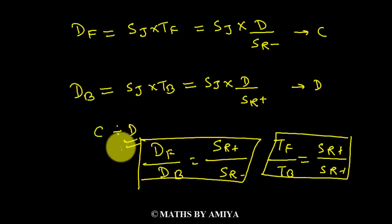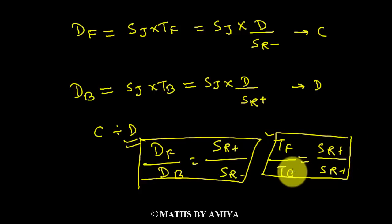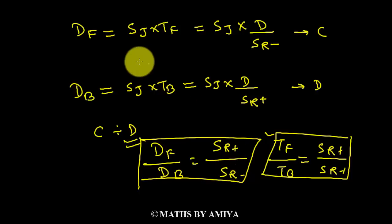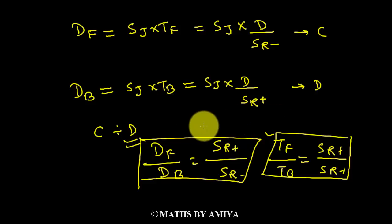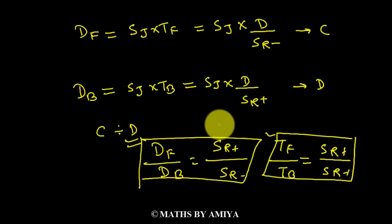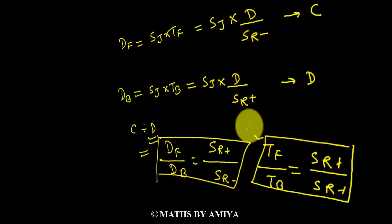So we have two outcomes: one in terms of time and one in terms of distance, both with respect to relative speed. The first is time forward upon time backward equals speed relative plus upon speed relative minus. The joker is the object moving to and fro. We can apply this concept in police-thief-dog questions as well — any situation where a person moves to and fro a definite or indefinite number of times. For better understanding, let's solve a few questions.